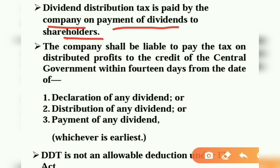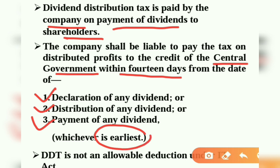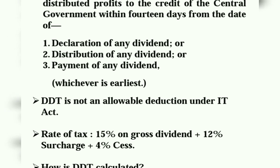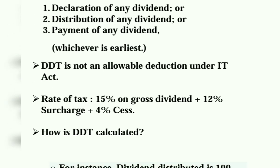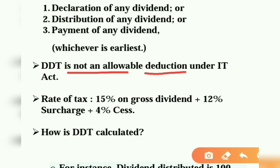Kise pay karti hai? To the Central Government. Kab pay karti hai? Within 14 days from declaration, distribution or payment of dividend, whichever is earlier. This is the date when the company has to deposit or pay the tax to the Central Government. Kya us dividend distribution tax ka deduction company le sakti hai? No. DDT is not an allowable deduction under the IT Act. So us amount ka wo deduction company cannot claim.